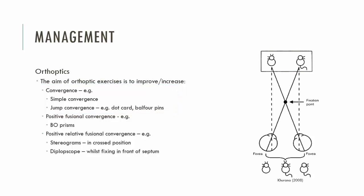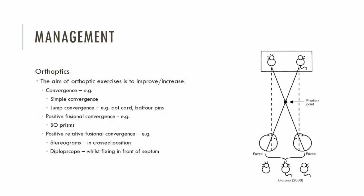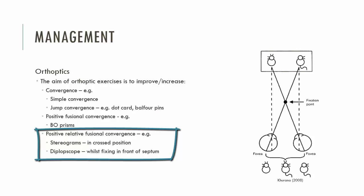If convergence near point is normal, what I would target is the fusion range or the relative fusional vergences. We could give base-out prisms to target fusional convergence — but again, only if the fusion range is reduced. For example, at near there should be a fusional convergence of about 35 prism diopters, so if you found it was only 10, there's an issue and you may prescribe base-out prisms to improve the fusional convergence range. Another possibility is to exercise positive relative fusional vergences, so the patient is converging in excess of their accommodation.